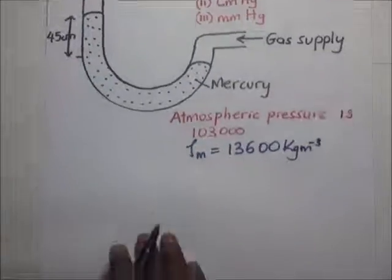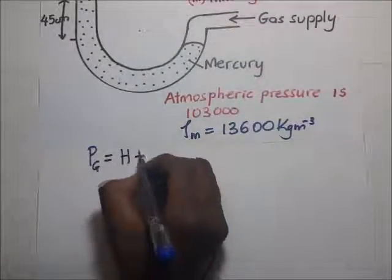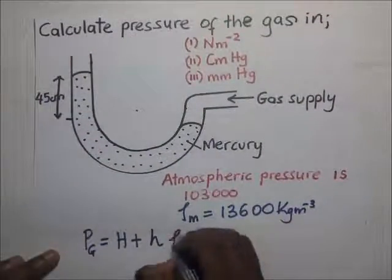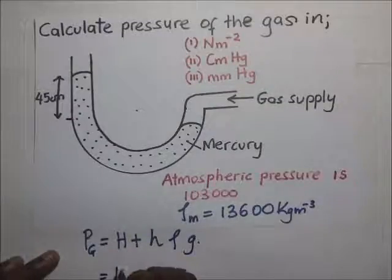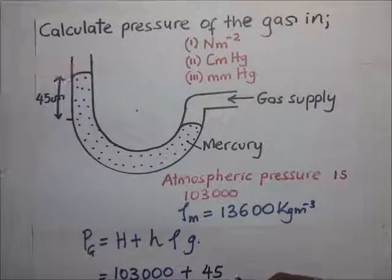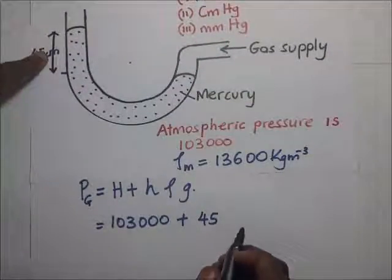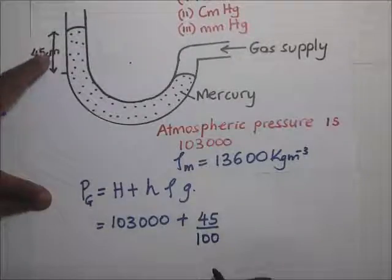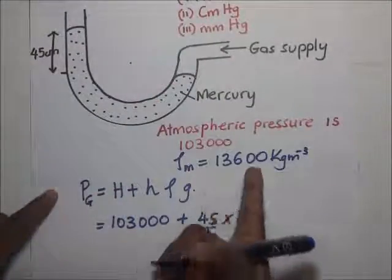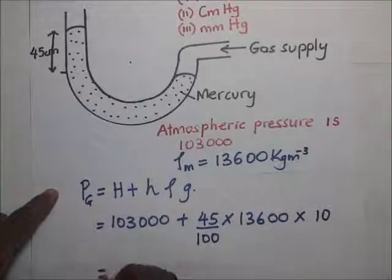The pressure of the gas supply equals atmospheric pressure plus H·ρ·g. So it is 103,000 plus the height of 45 centimeters, converted to meters by dividing by 100, times the density of mercury 13,600, times gravity 10. The rest is arithmetic.